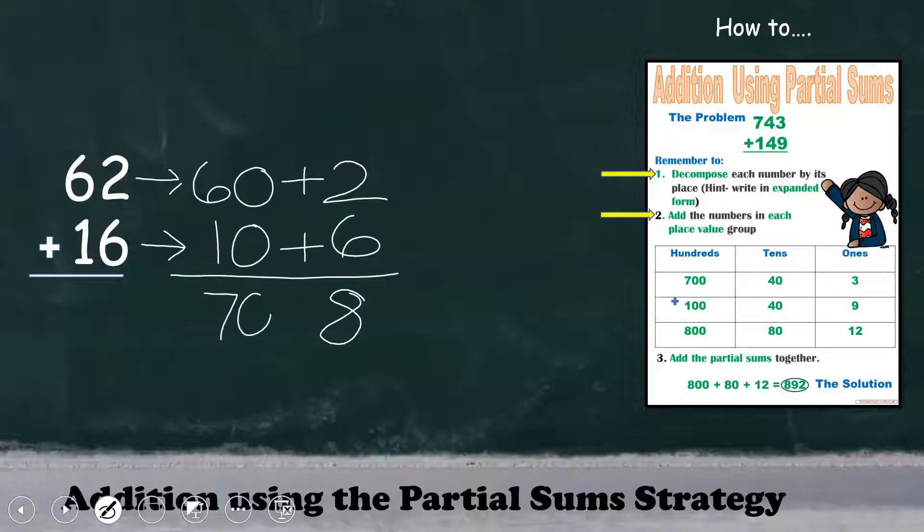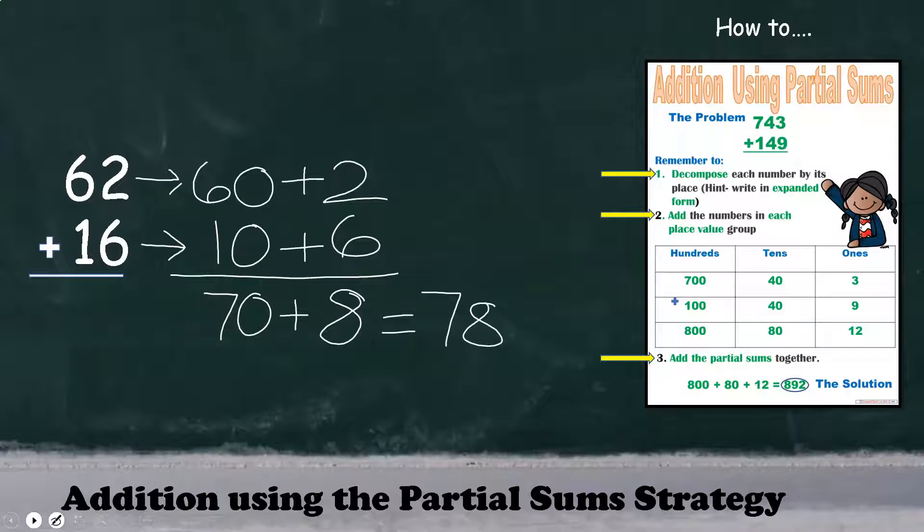And then we have six tens plus one ten is seven tens, which is 70. Step three, we're going to go ahead and add up the partial sums. 70 plus eight is 78, so we know the sum of 62 plus 16 is 78.